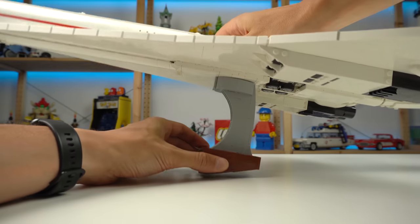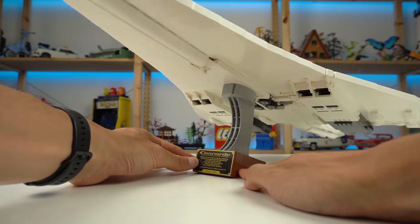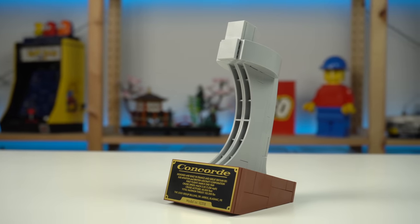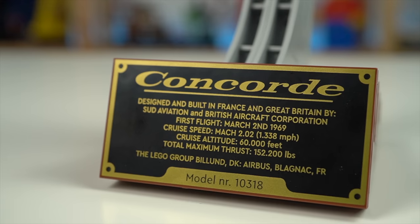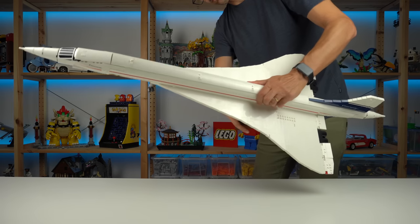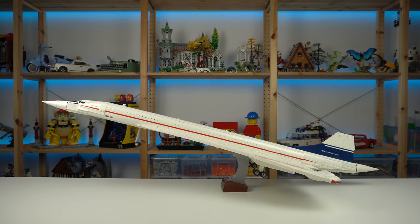Last but not least the display stand kinda giving that old 60s and 70s vibe with the brown color to represent wood or the printed info plaque with the golden accents with lots of cool info about the real aircraft. I'm also really surprised how such a small build manages to hold a 2000 piece LEGO model on top of it like it's no big deal.